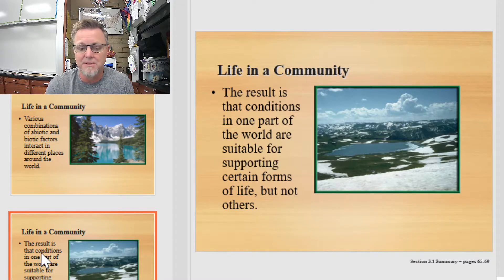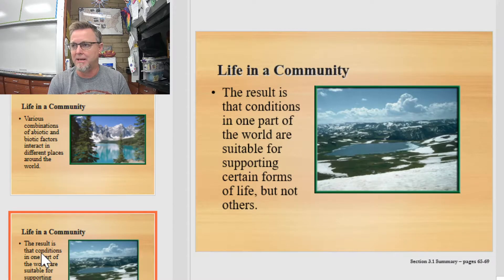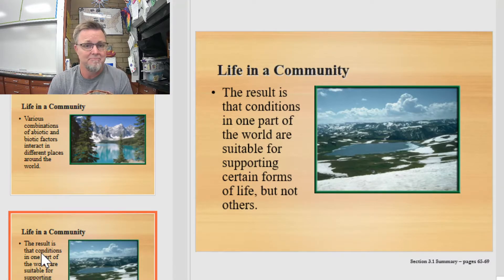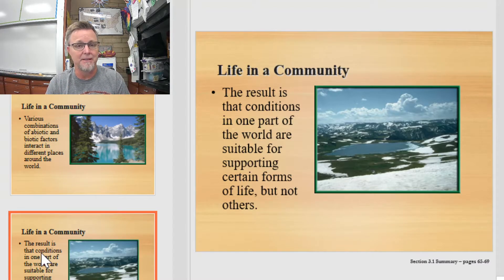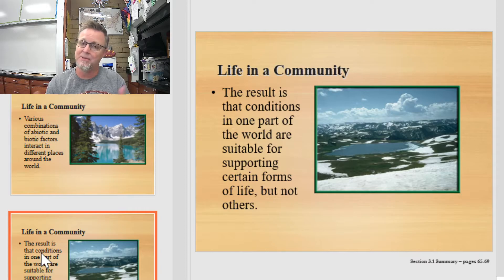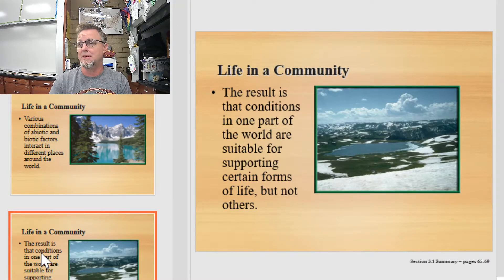The result of that interaction is that conditions in one part of the world are suitable for supporting only certain life forms, but not others. That's why camels and palm trees are found in the desert and not in the Arctic tundra where there's snow. A palm tree probably tried to live at the polar ice caps but found that it does not have the advantageous adaptations that make that possible. Since plants can't get up and leave, they simply died off, and those organisms with the advantageous adaptations survived. That's how life basically differentiated itself across the surface of the globe — life forms interacting with the non-living parts of the environment, determining what they can or will tolerate, and setting root and persisting.